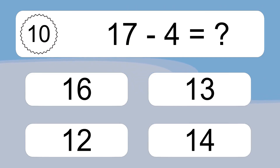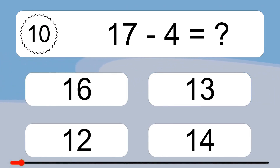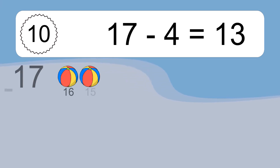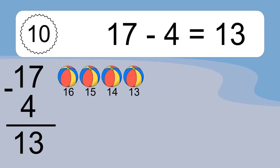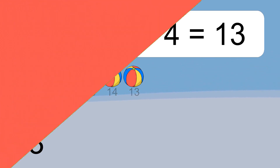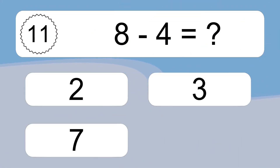17 minus 4 equals what? 17 minus 4 equals 13. Let's count it. 16, 15, 14, 13.